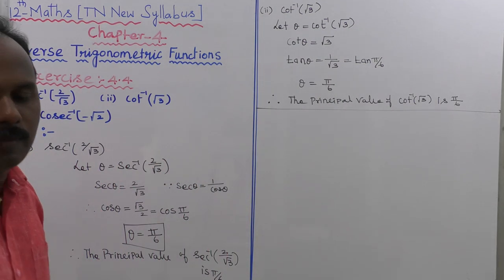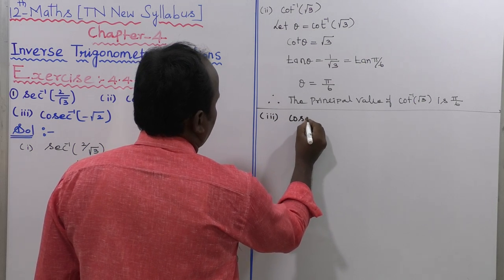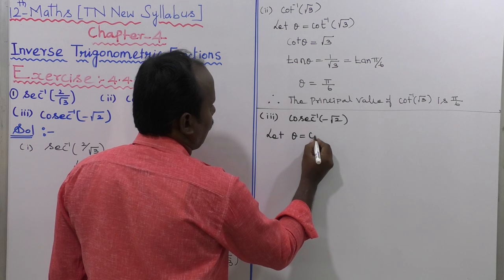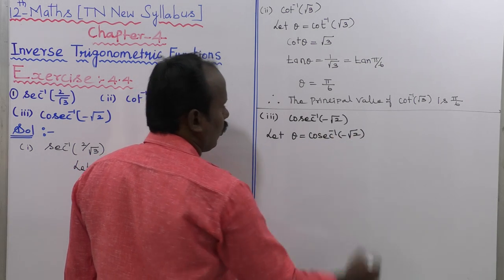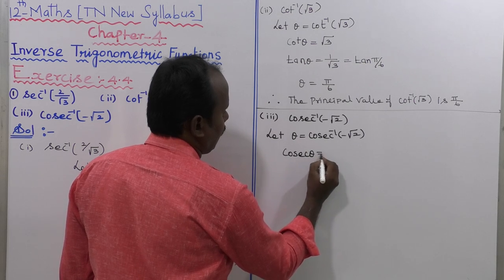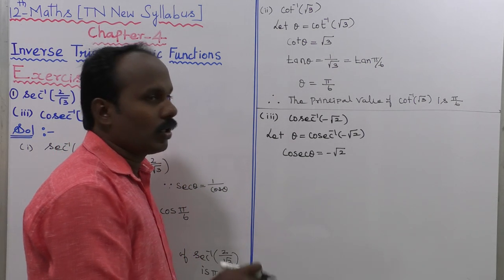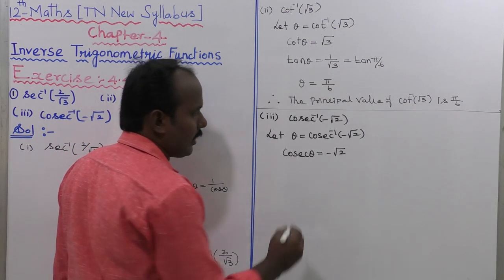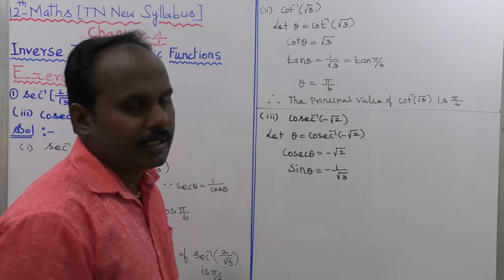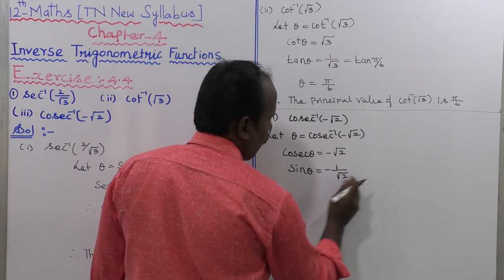Now the third subdivision: cosecant inverse of minus root 2. Let us consider theta equal to cosecant inverse of minus root 2. So cosecant theta equals minus root 2. The reciprocal ratio of cosecant is sin theta, so sin theta equals minus 1 divided by root 2.